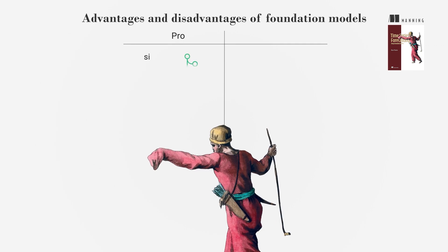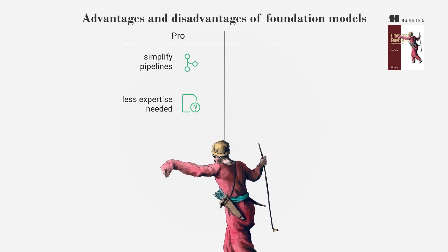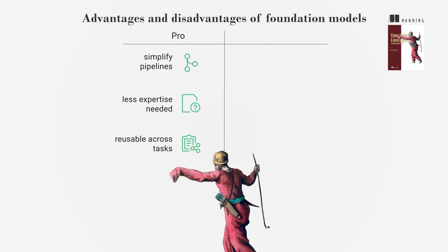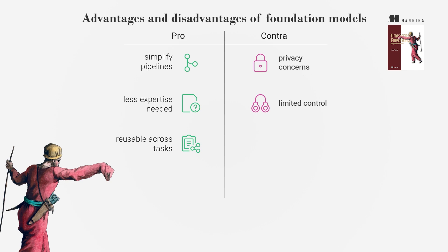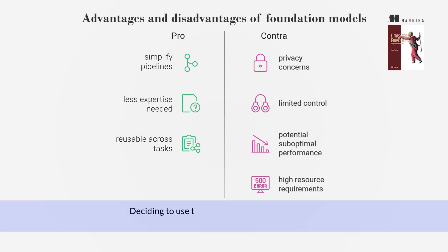Foundation models simplify forecasting pipelines, require less expertise, and are reusable across tasks. However, they raise privacy concerns, limit control over capabilities, may not always be optimal, and require significant storage and computing power. Deciding to use them involves weighing accuracy and cost against traditional models.